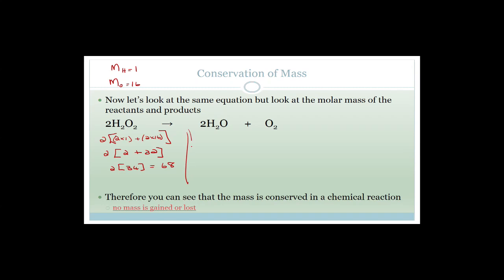On the right-hand side, we've got 2 times (2 times 1) — that's the hydrogen — plus 2 times 16 for the oxygen, because this is a diatomic molecule. That becomes 2 times 18, which is 36, plus 32, which equals 68. So you can see that the mass is conserved in a chemical reaction — no mass is gained or lost.